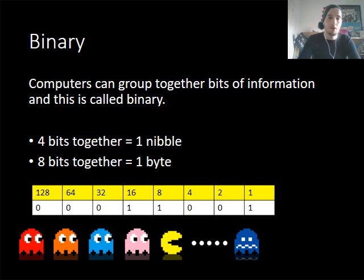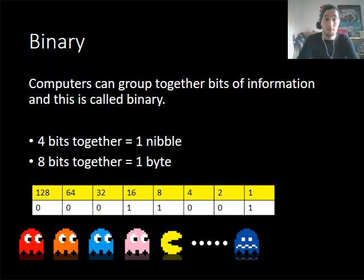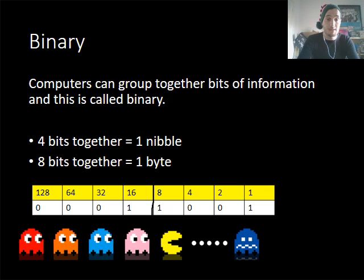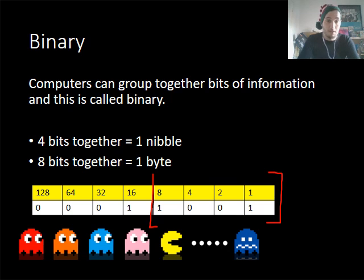When you've got four bits of information together, this is known as a nibble. Starting from the far right and moving your way up, you can see we're going 1, 2, 4 and 8 — that is what we would know as a nibble. Now when we put eight of those bits together — eight binary digits — that is what we call a byte of information.